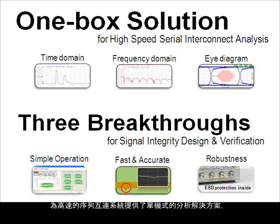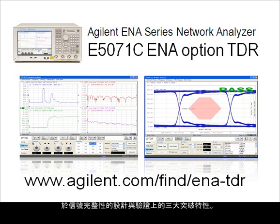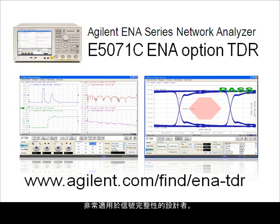Delivering one-box solutions for high-speed serial interconnect with three breakthroughs for signal integrity design and verification — the Agilent E5071C ENA Option TDR, engineered for signal integrity designers. For more information, visit our website at www.agilent.com.